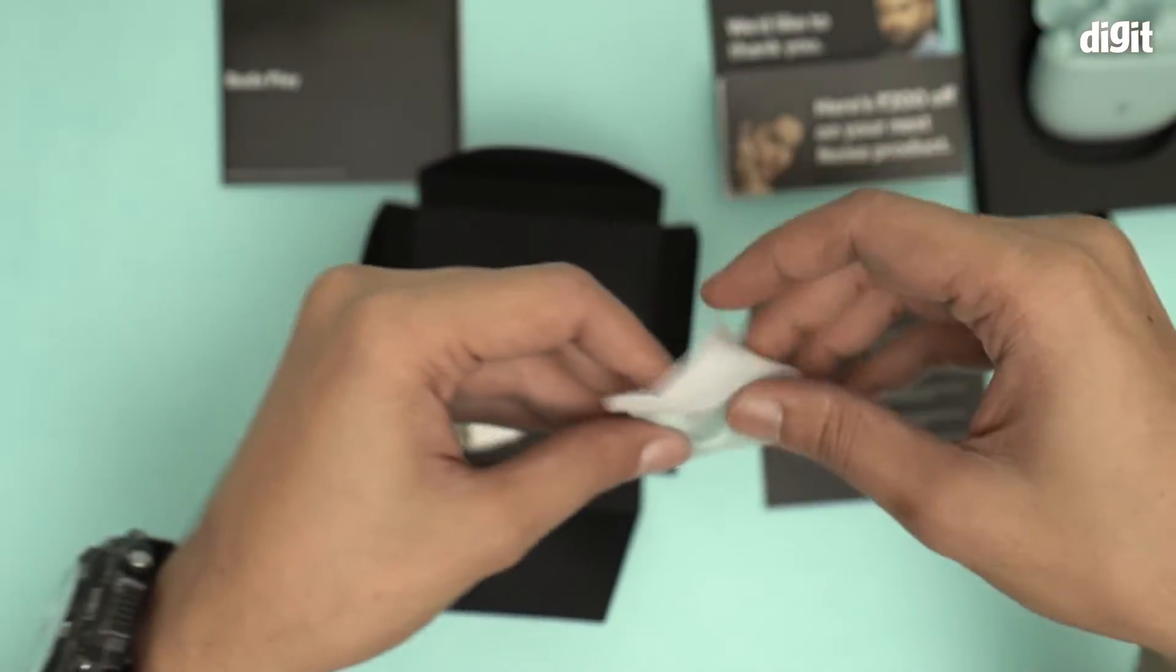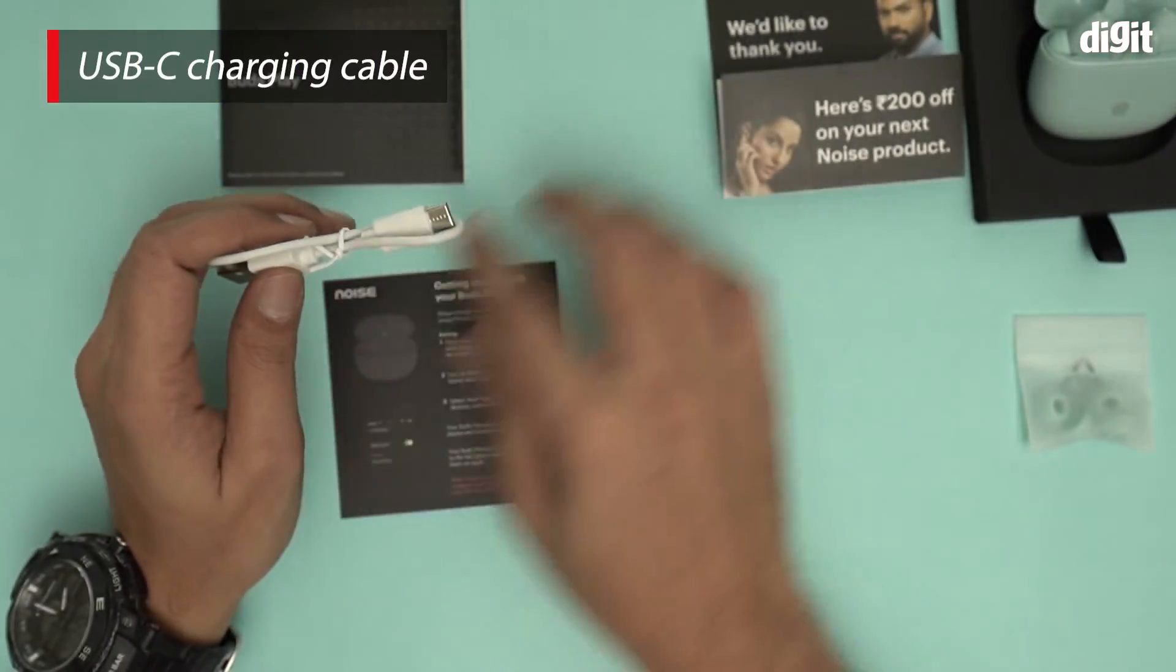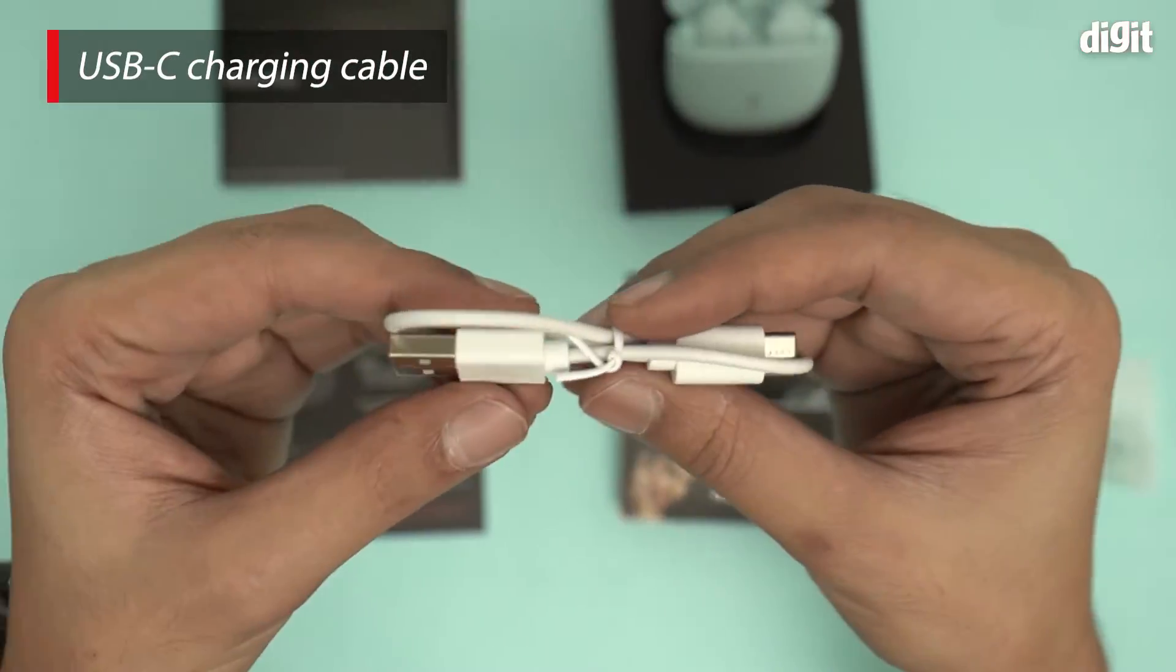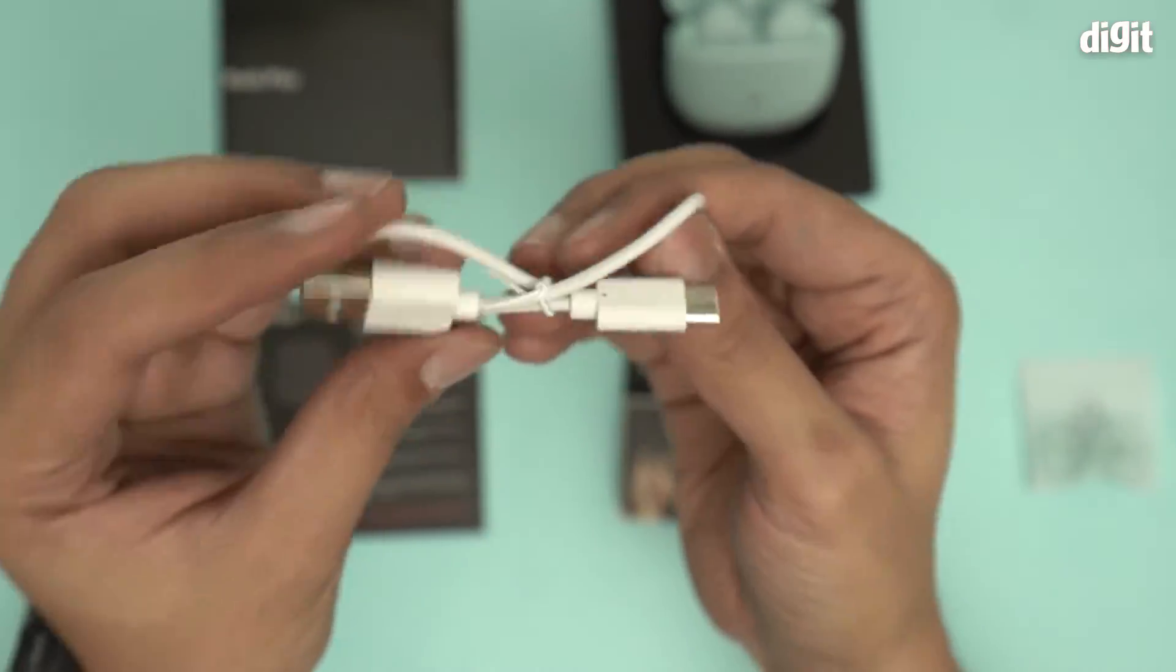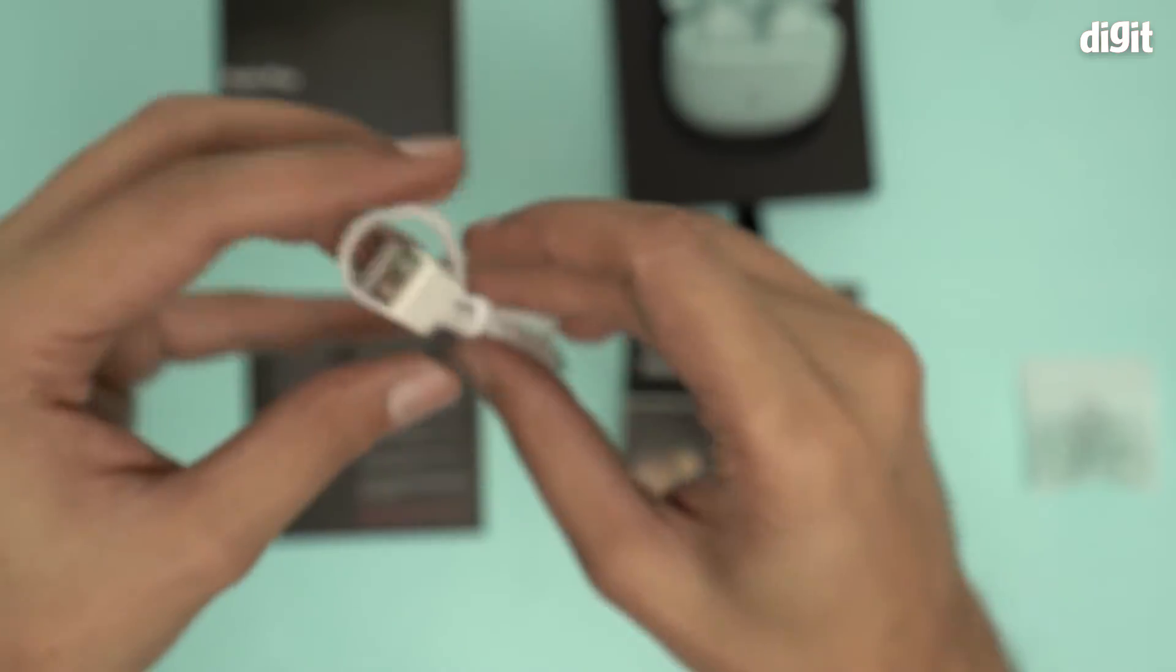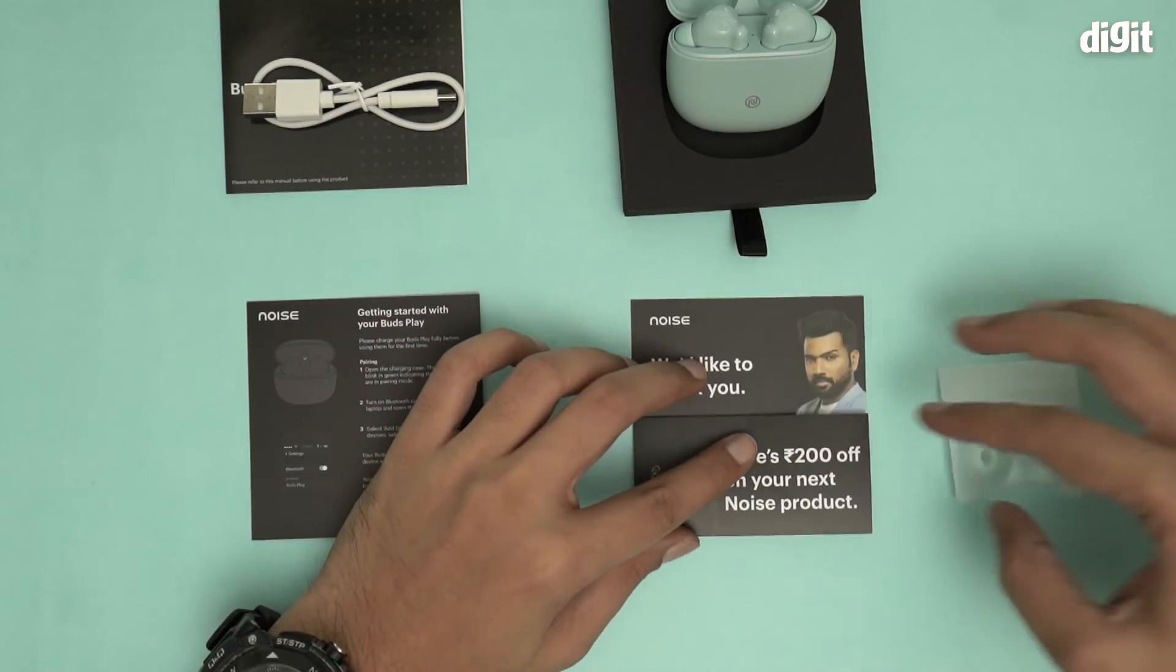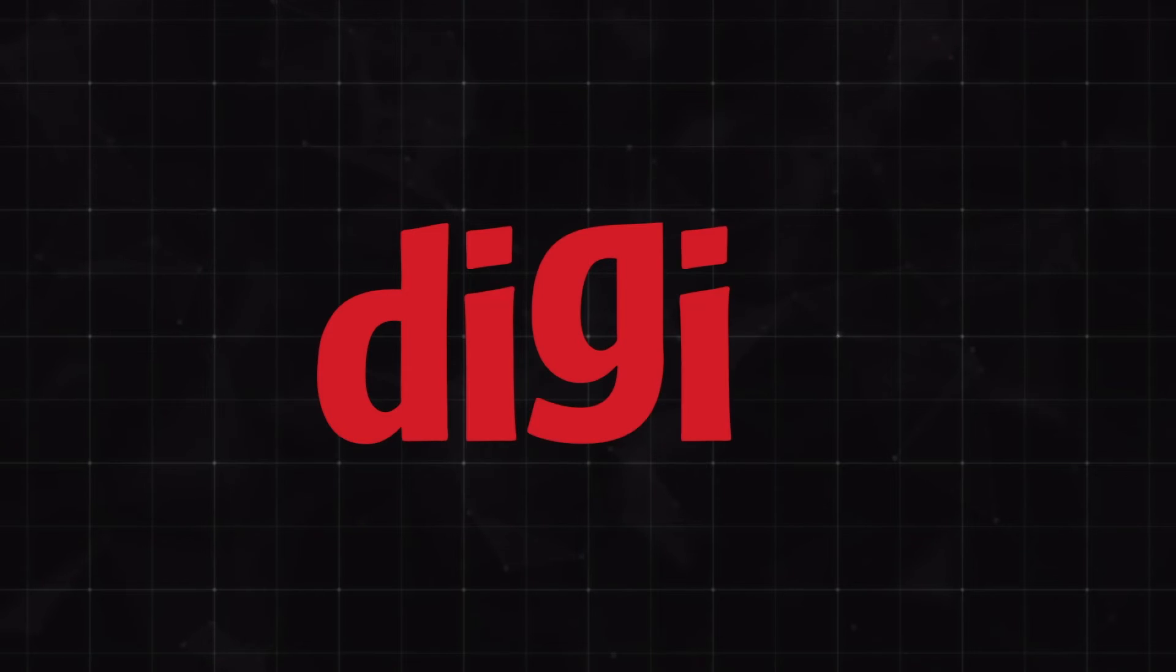And finally we have the USB-C type charging cable. Let's get a closer look. Yes, there's a USB-C type charging cable, USB-A on the other end. And that's all you'll find inside the box containing the Noise Buds Play Version 2 true wireless earphones. Thank you for watching.